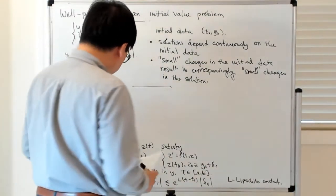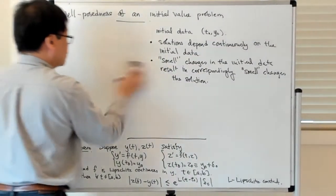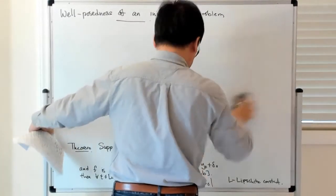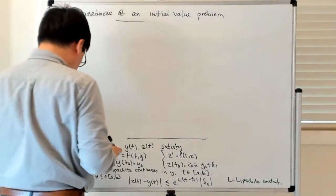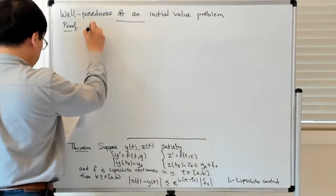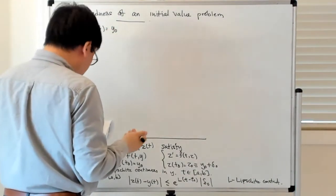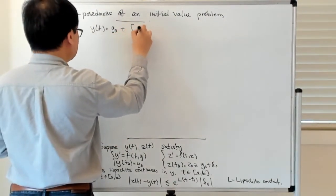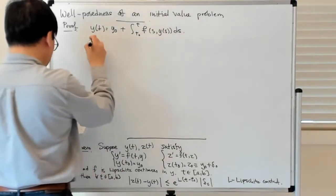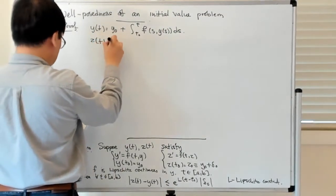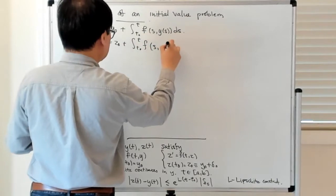Let's try to prove this. Using the fundamental theorem of calculus, we know that y(t) = y₀ + ∫[t₀ to t] f(s, y(s)) ds. And also z(t) = z₀ + ∫[t₀ to t] f(s, z(s)) ds.